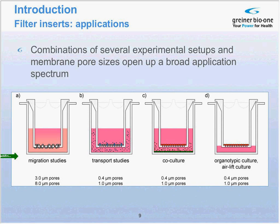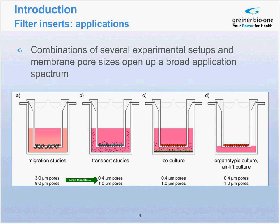This chart gives an overview of different in vivo situations. It starts with the physical translocation of a cell from one place to another — we call this migration. These studies are carried out with inserts carrying 3 or 8 micrometer pores. Other applications with inserts include transport studies, co-cultures, and organotypic cultures, which are performed with 0.4 or 1 micrometer pores in the insert membrane.